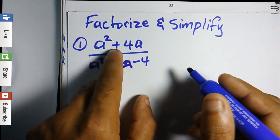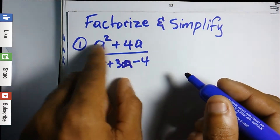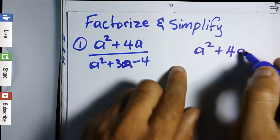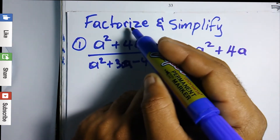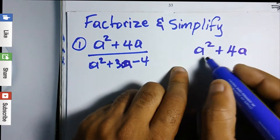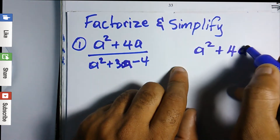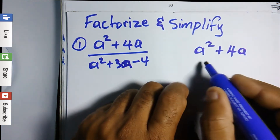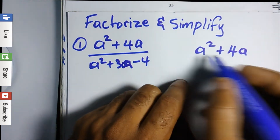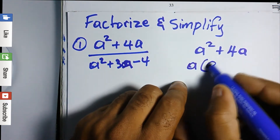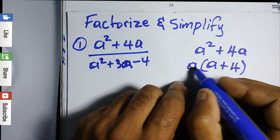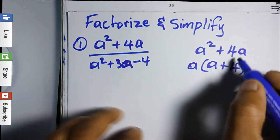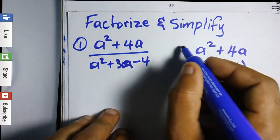The question has a top section and a bottom section. The top section is a squared plus 4a. As the question suggests, we need to factorize and simplify. For the top section, this is factorization by grouping — a is common on both sides, so we factorize to get a open bracket a plus four close bracket.